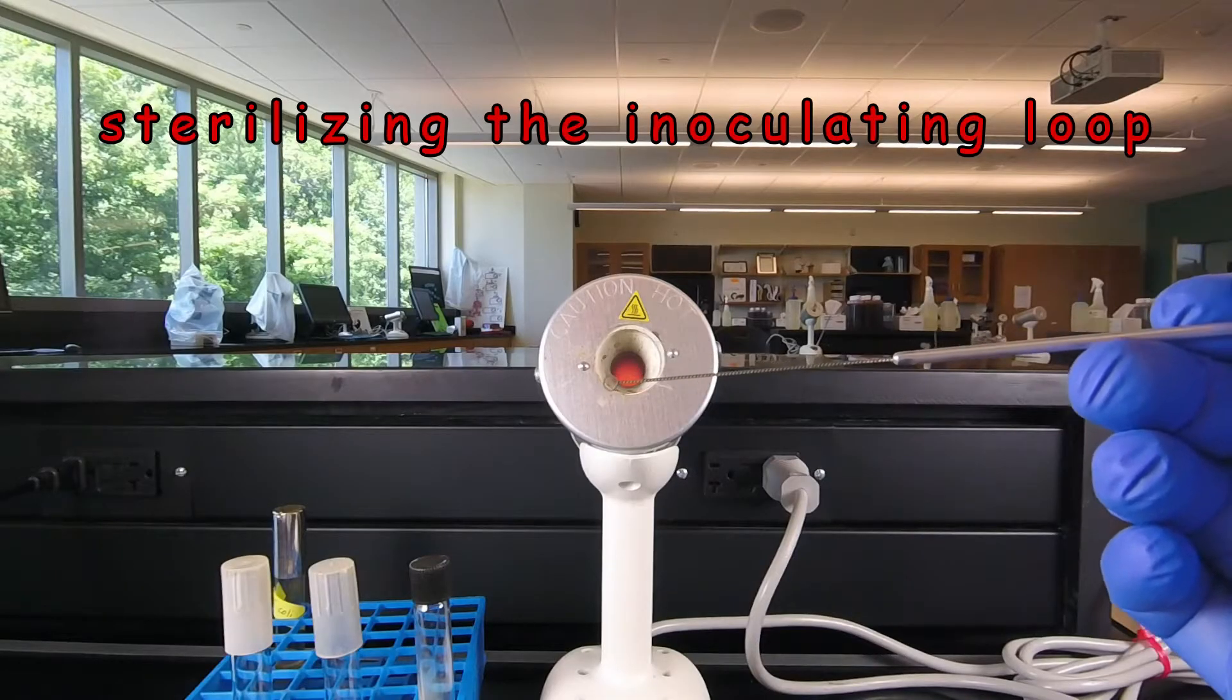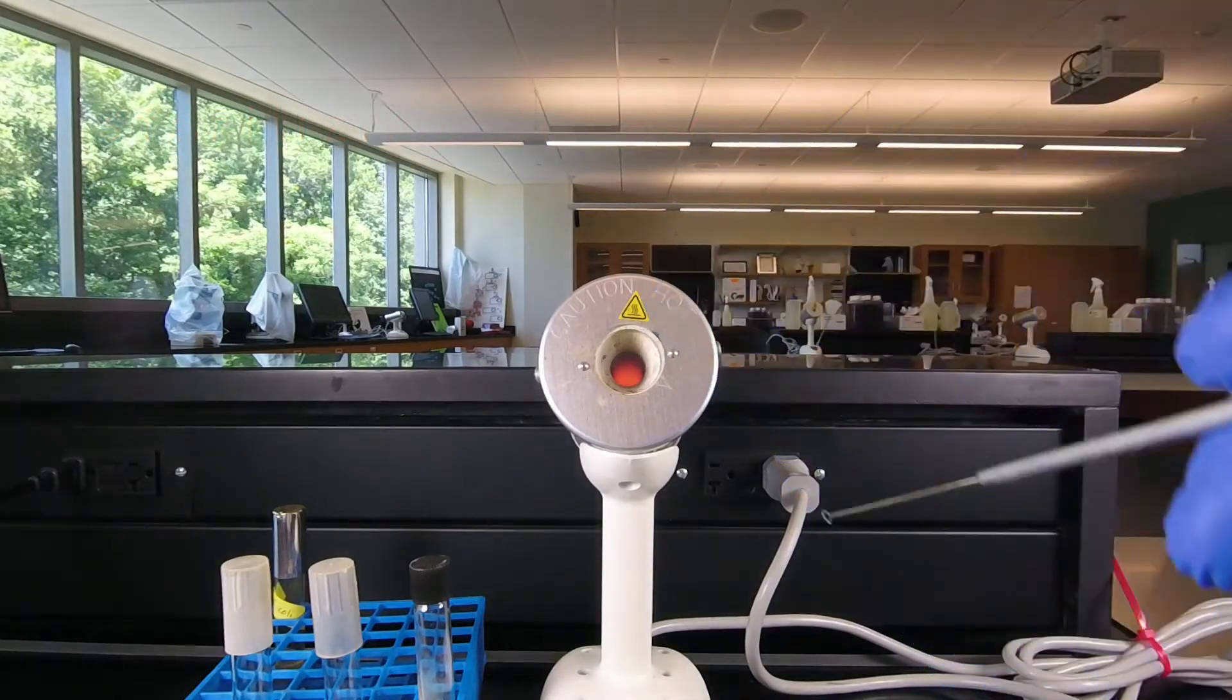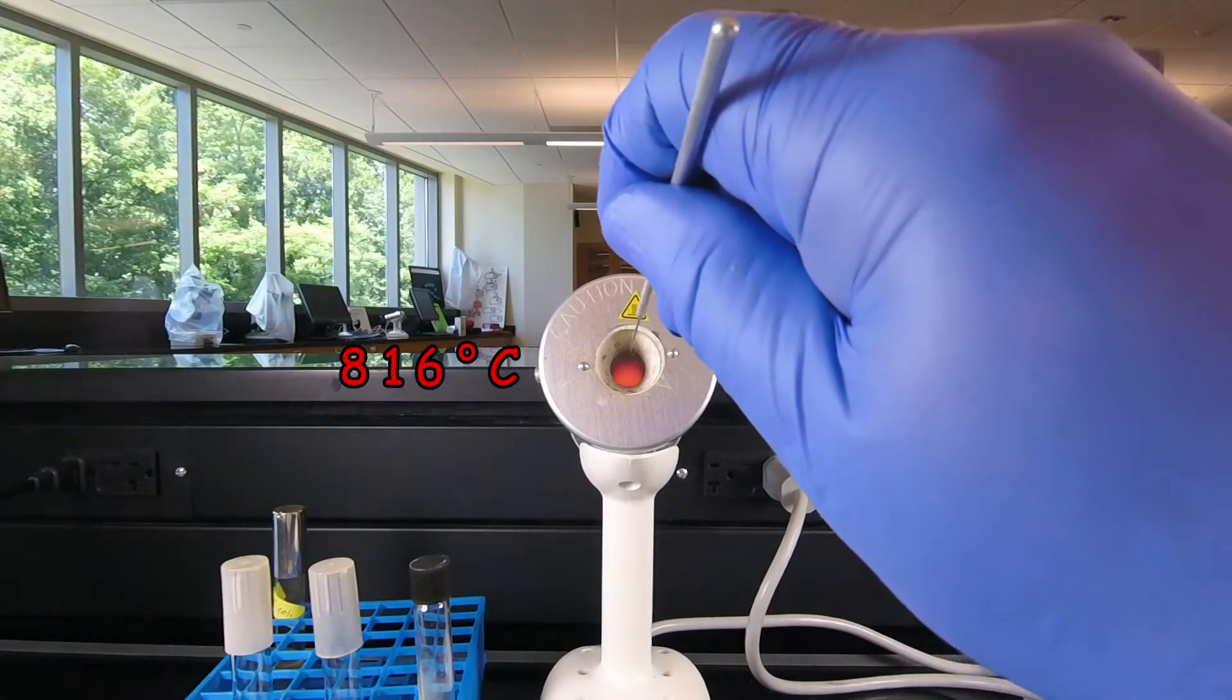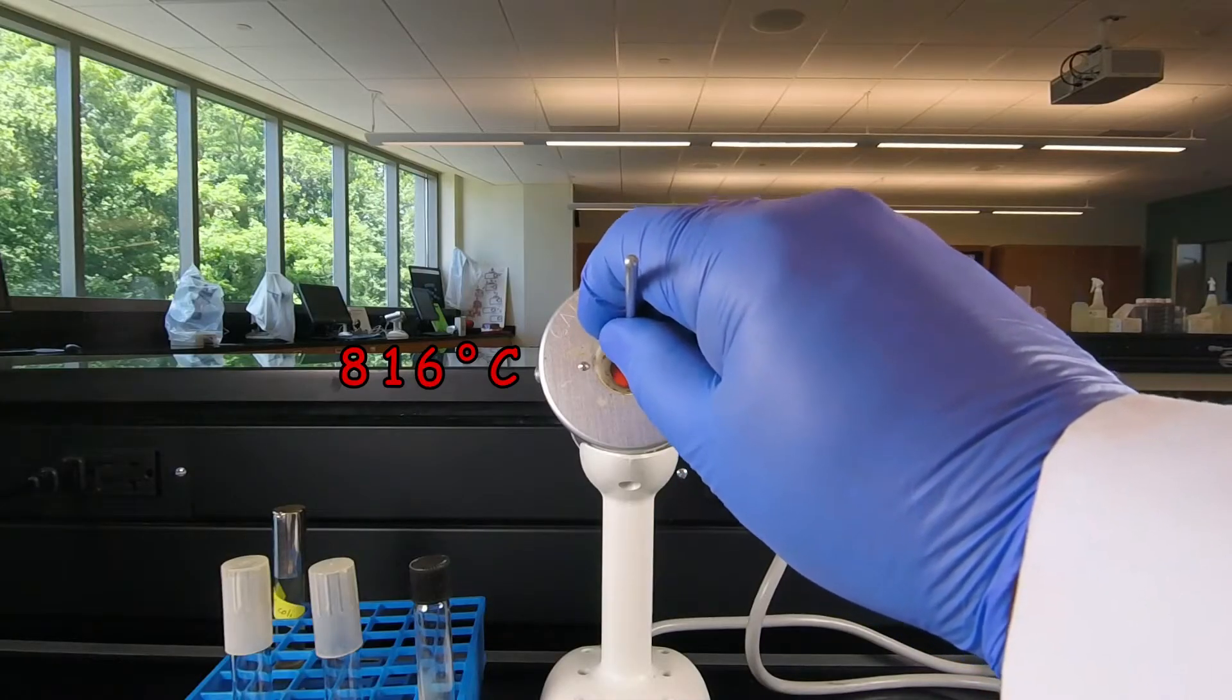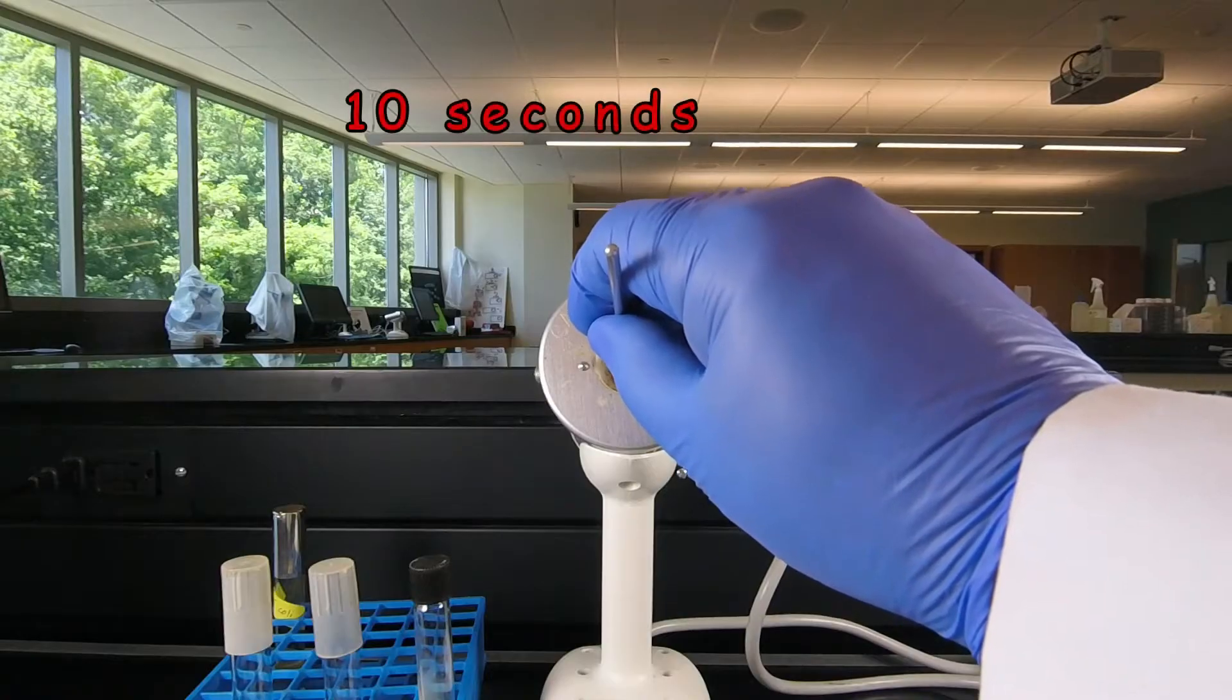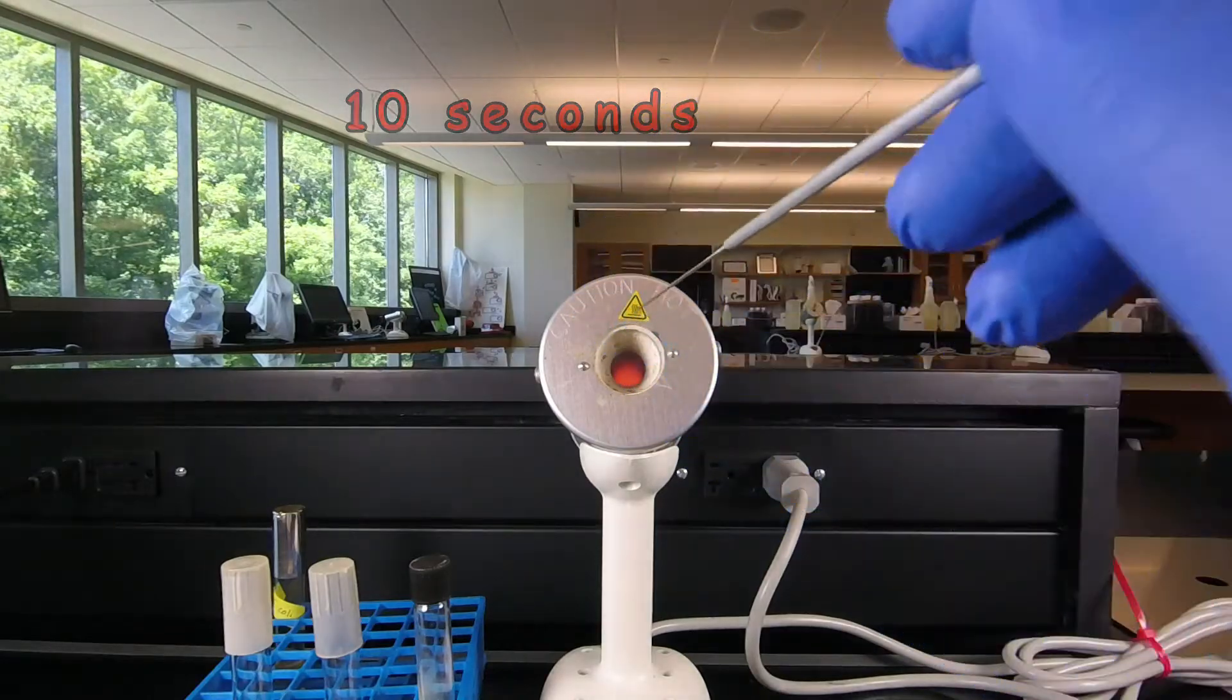We used to use Bunsen burners for this but most of the time today we use Bacto incinerators like you see here. And you'll notice it's glowing orange inside so what we do is we take our loop and we put it all the way in until the beginning of the handle is just where the orange part is and we leave it in for a full ten seconds. And then it's sterile.